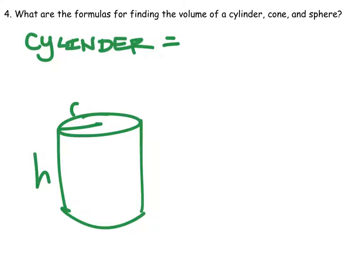That's the radius and that's the height. So if we can find the volume of one layer, which is really just the area of that circle, that would be pi r squared. But it tells us that we have many layers of this circle.